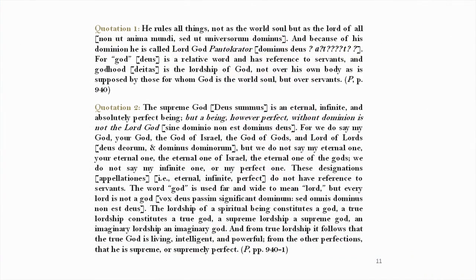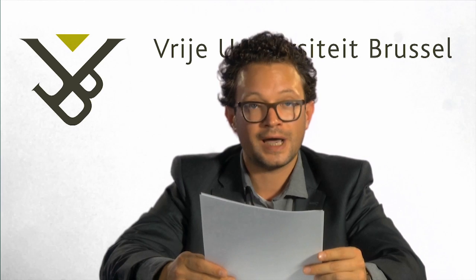At the very start of the fourth paragraph in the published version of the General Scholium, Newton stated his conception of God — this is quotation one on page eleven. Newton states that God is to be conceived as a pantocrator. The words 'as is supposed by those for whom God is the world's soul' were added in the third edition of the Principia. In the second draft of the General Scholium, Newton explained why he denied that God is an anima mundi: because God has no body.